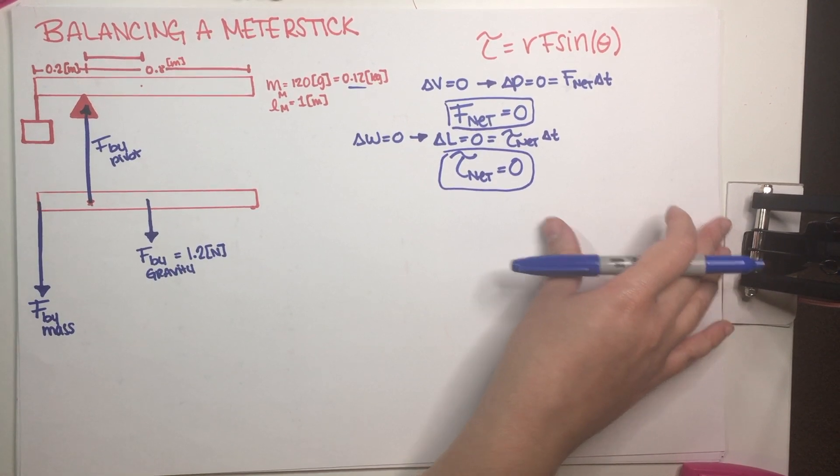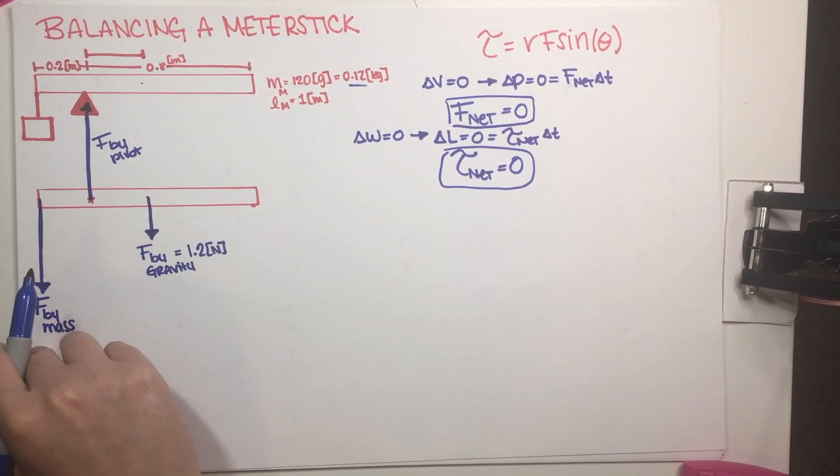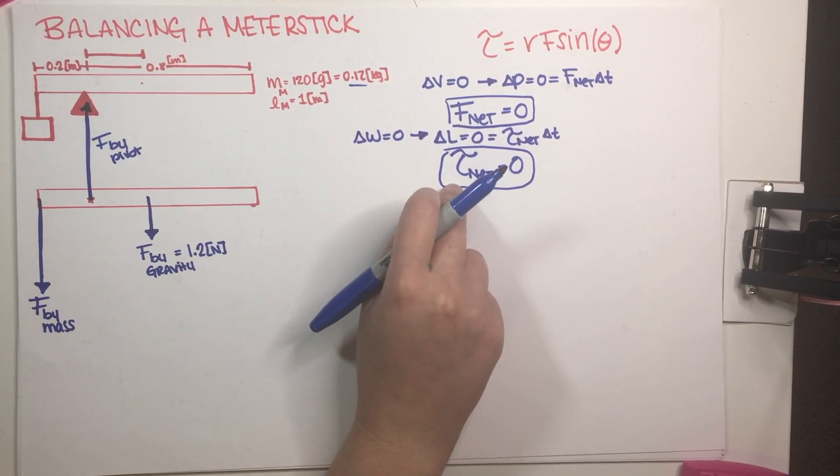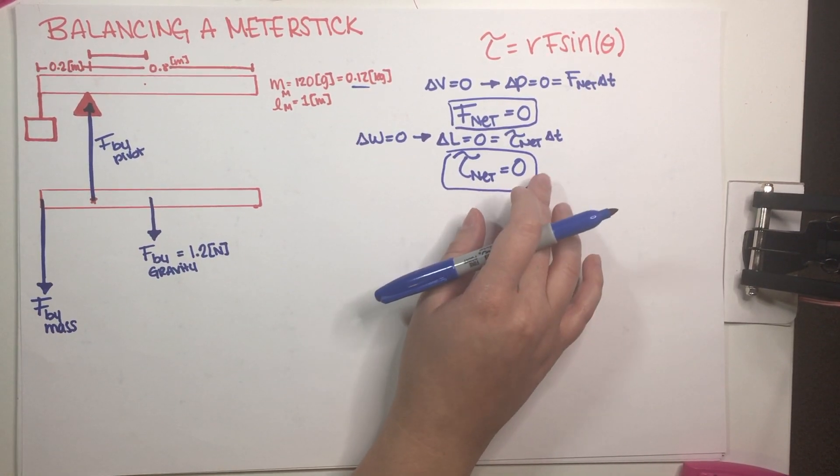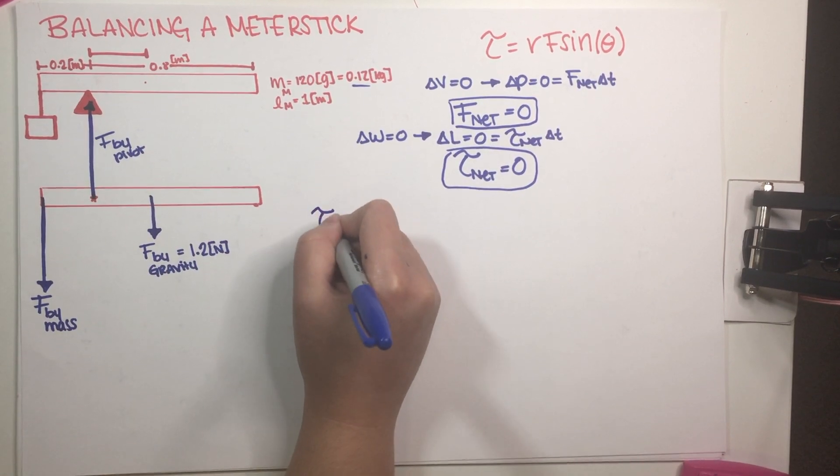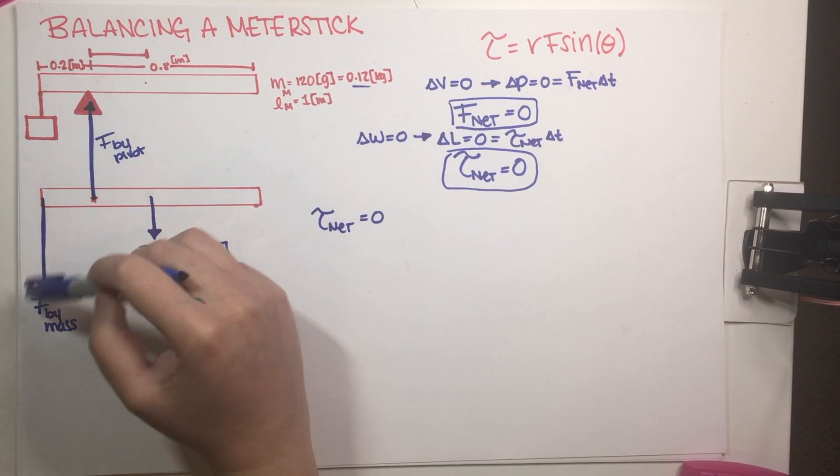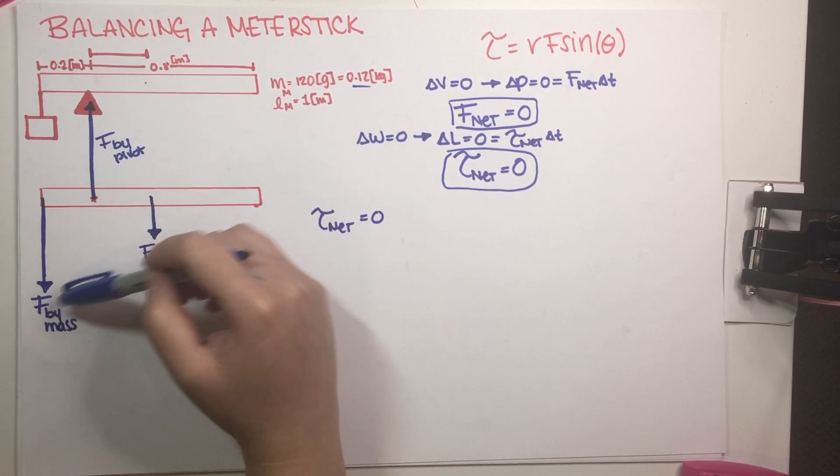So let's see how we can make use of them. So starting with part A, I need to figure out what the force by this mass is. So now what I'm going to do is I'm going to use this information, balancing out the torques, in order to figure this out. So my net torque has to be equal to zero.